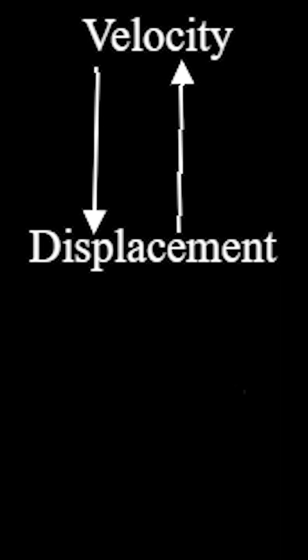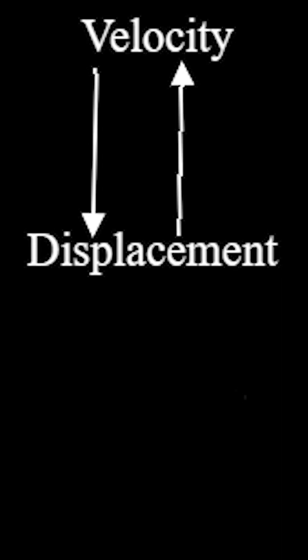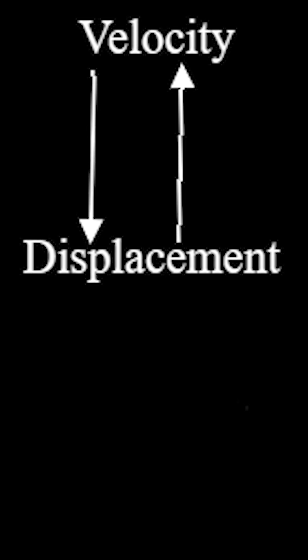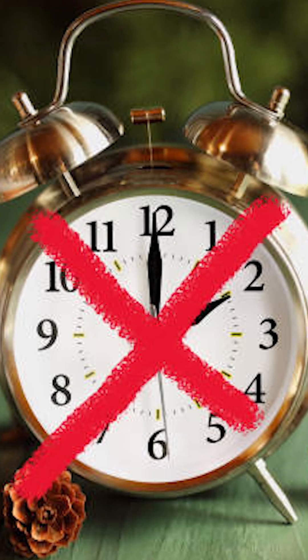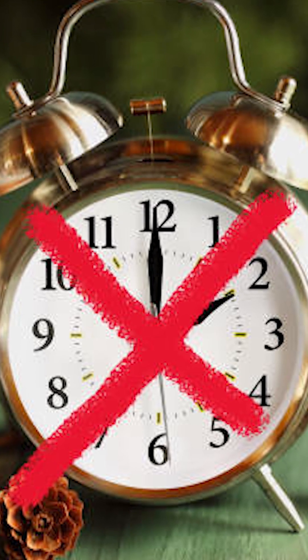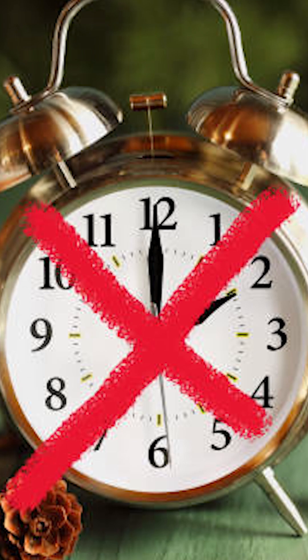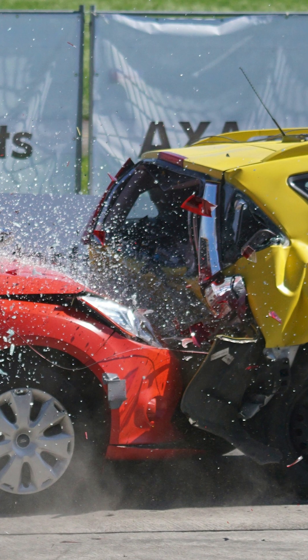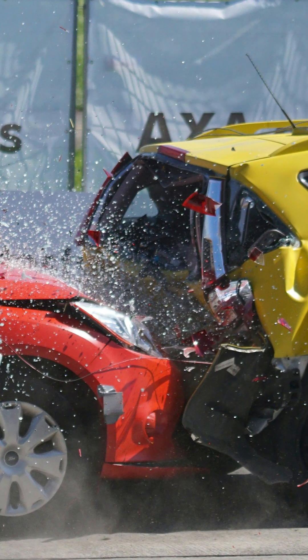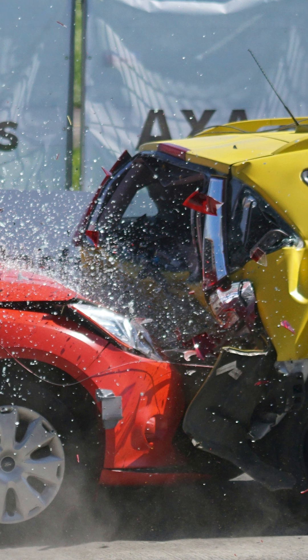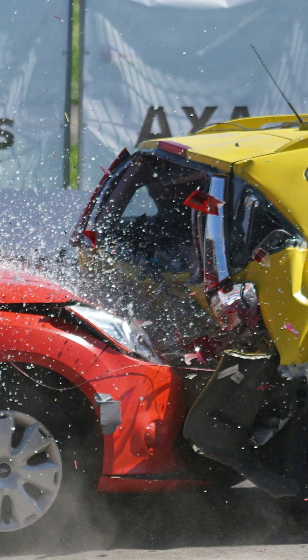And finally, the third equation ties velocity directly to displacement: v squared equals v-zero squared plus two times a times delta-x. No time variable here — perfect when you don't know how long something's been moving. This one's great for crash problems, projectile motion, or anytime you just want start speed, end speed, and distance.